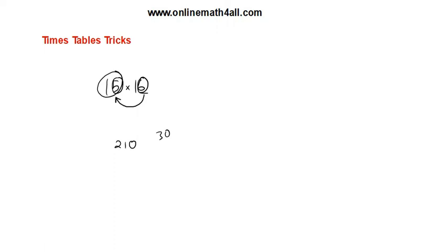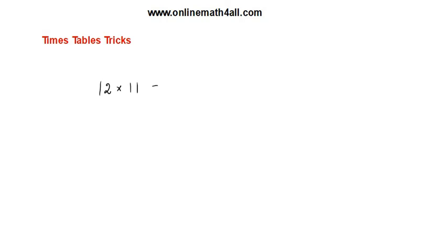Now let us try some examples mentally without writing. 12 times 11: the first two-digit number is 12, and the ones digit of the second number is 1. Add 1 to 12 to get 13, which becomes 130. Multiply the ones digits: 2 times 1 is 2. So 130 plus 2 is 132. The product is 132. With much practice we are able to do it without writing anything.